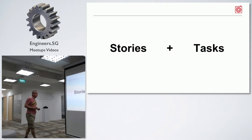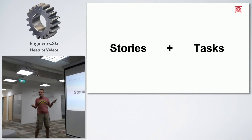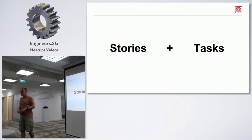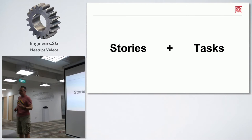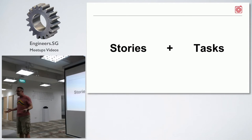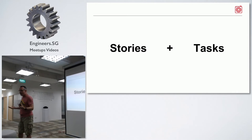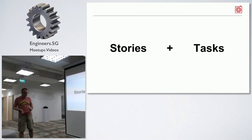Your sprint plan is going to be made up of stories and tasks. Stories are a description of customer value, of end user value — something an end user wants to do. Tasks are things you have to do. We'll talk about how to get a good story and how to build it.